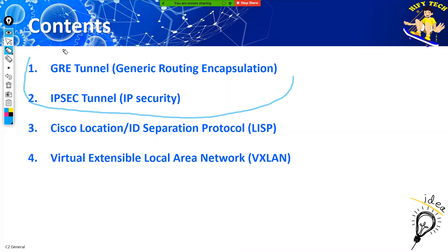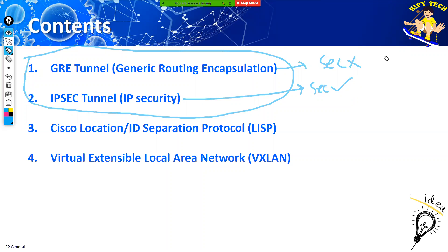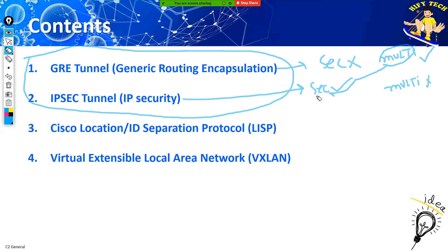We have discussed GRE tunnel and IPSec tunnel. GRE tunnel does not have security, but IPSec has security. However, if we talk about multicast traffic, GRE tunnel supports it but IPSec tunnel does not support multicast traffic. So we combine GRE tunnel and IPSec to transport multicast traffic with security.